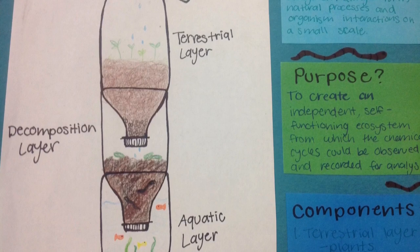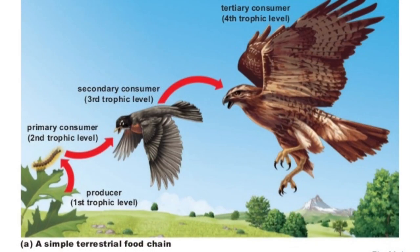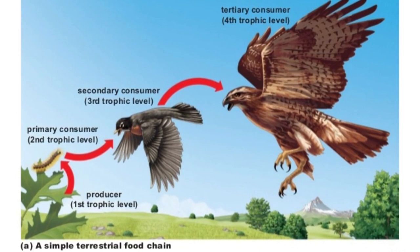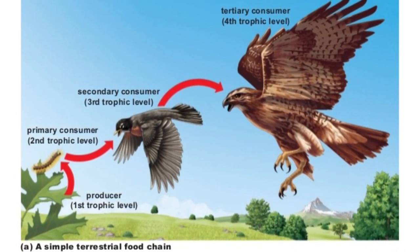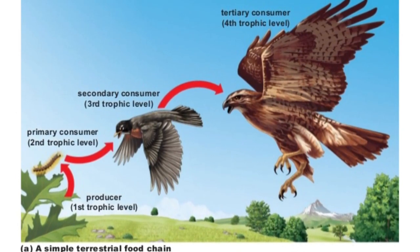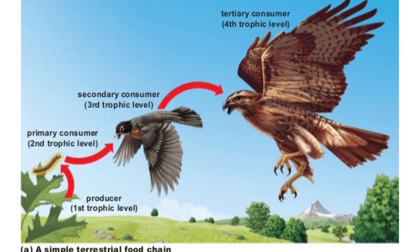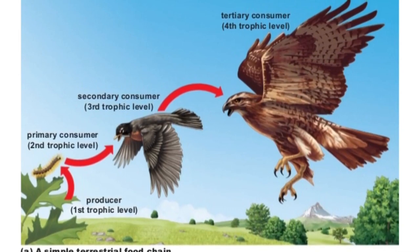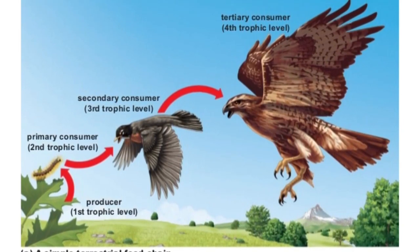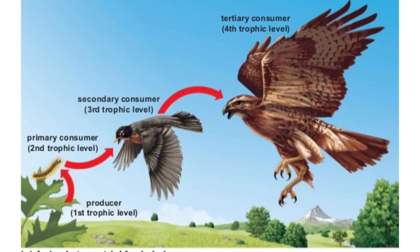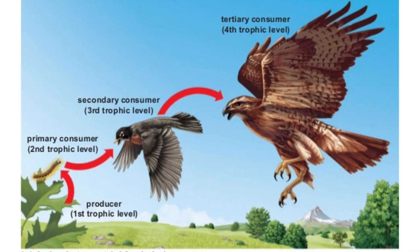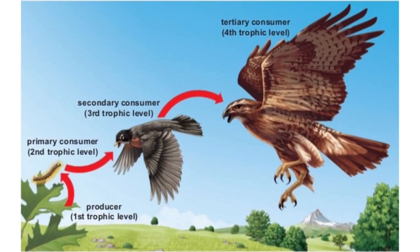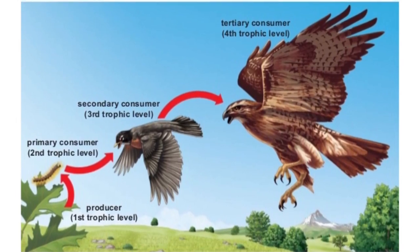It shows food chains. A food chain is pretty much what happens in nature — you start with a plant usually, that gets eaten by a bug, then gets eaten by a bird, then gets eaten by something like a cat, let's just say.